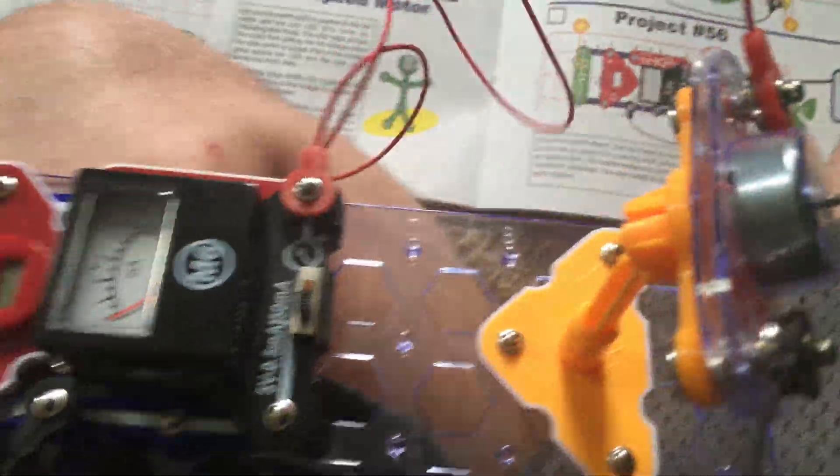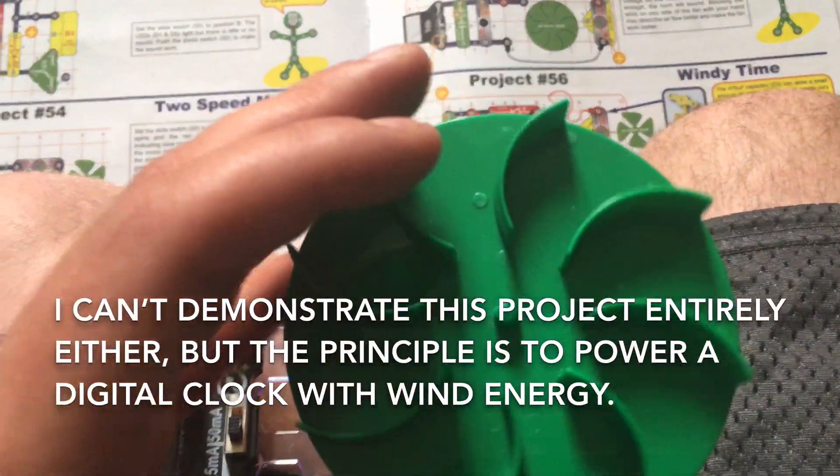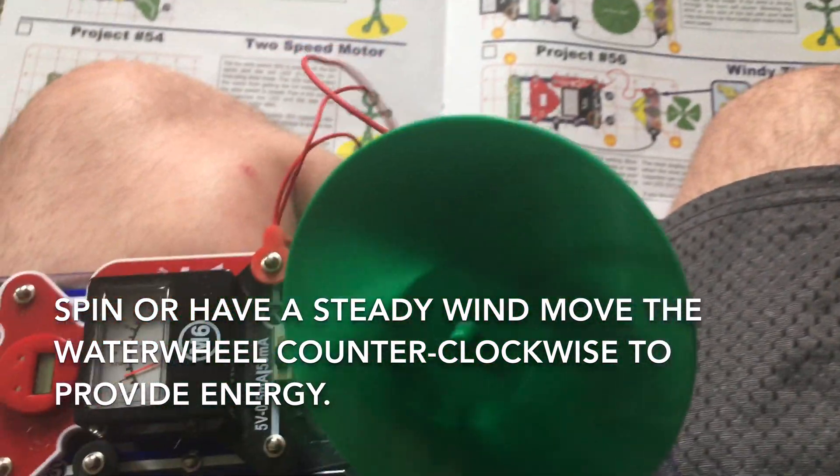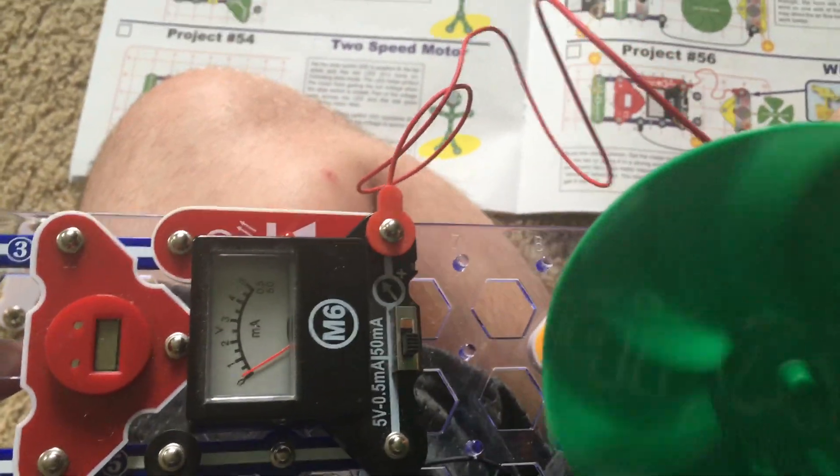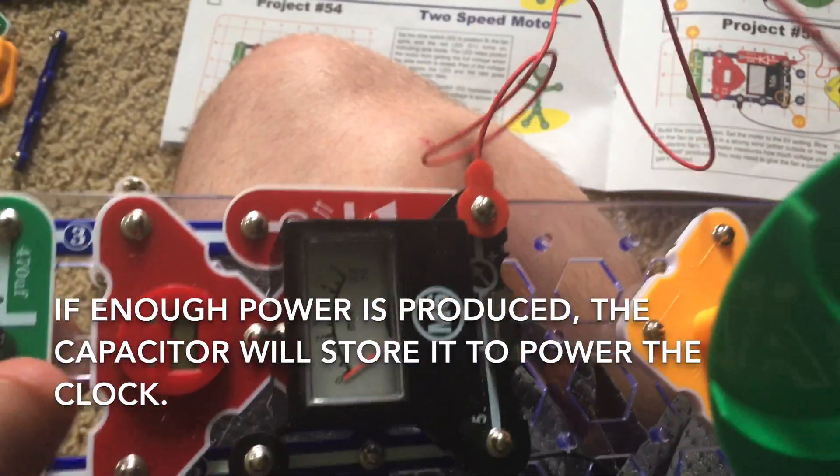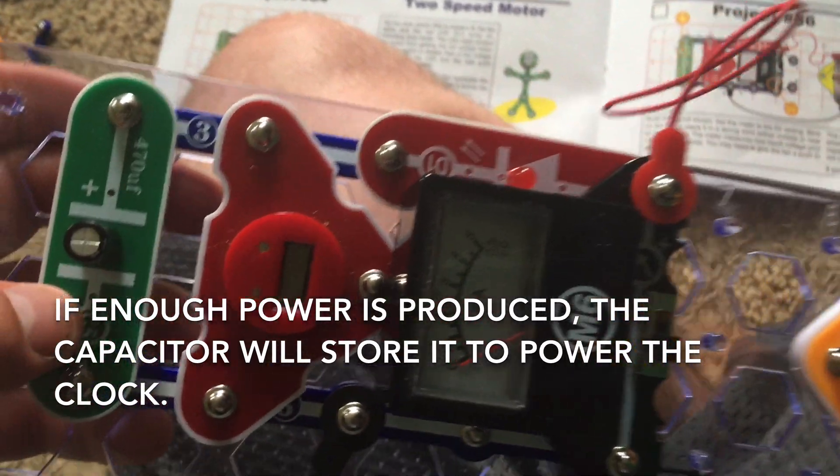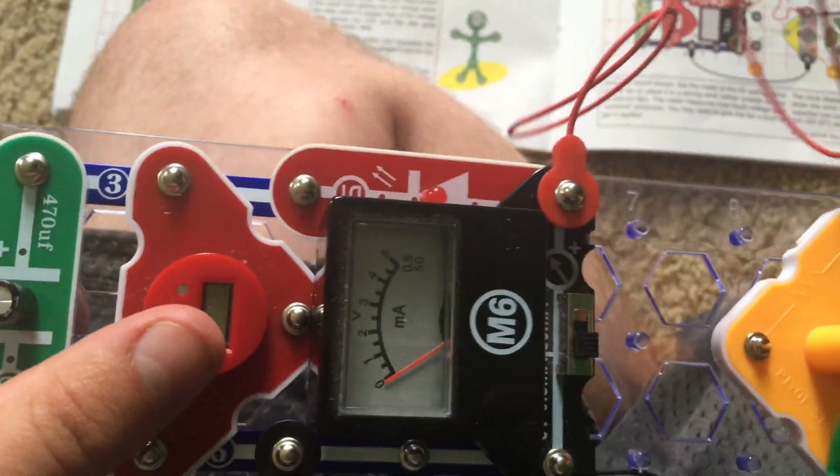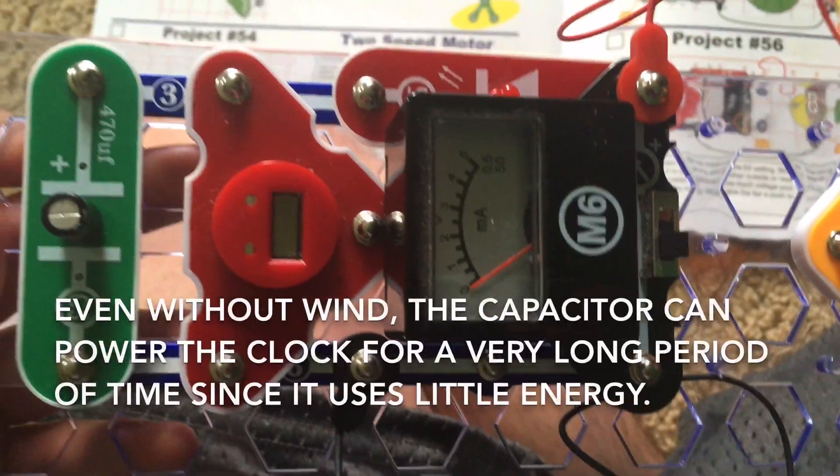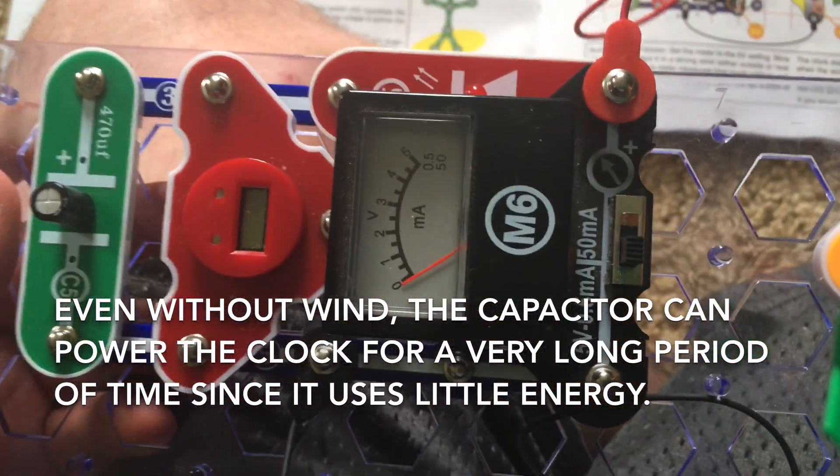For windy time, I cannot give you a full demonstration, but the principle of this project is to use wind power to make the clock work. You would spin the water mill on the motor counterclockwise or have a steady strong wind blowing on it. And if enough power is produced, the capacitor will charge and supply energy to the clock. Even if the wind is not blowing, because the clock uses little energy, the capacitor can power it for a while.